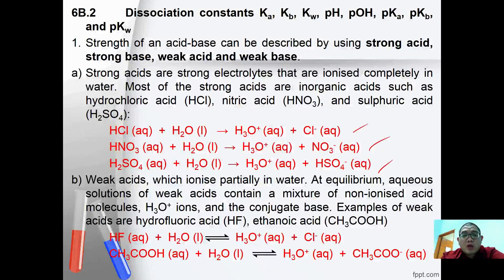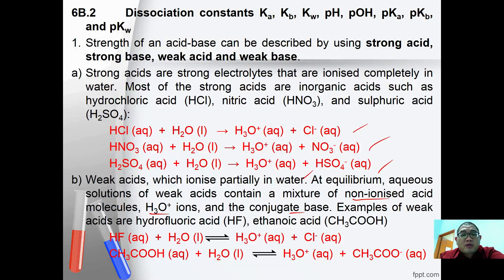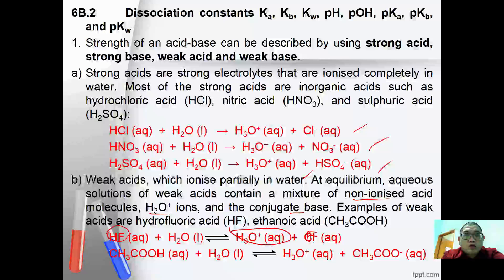Weak acids are acids that are ionized partially in water. An aqueous solution of a weak acid at equilibrium contains a mixture of non-ionized acid, hydronium ion, and the conjugate base. Examples of weak acids are hydrofluoric acid and ethanoic acid. When hydrofluoric acid dissociates in water, it forms hydronium ion and fluoride ion. This reaction is reversible.